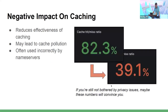Privacy issues are not the only problem. The other issue, maybe even more important to some, is the negative impact on caching efficiency. On the slide you can see a real-life example of how the DNS cache can be affected when ECS is enabled. The numbers might vary depending on the load of your server, but these are real numbers and the impact is quite negative.